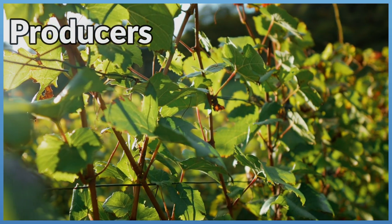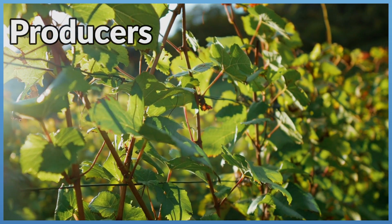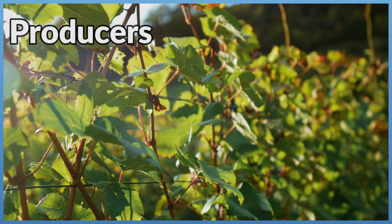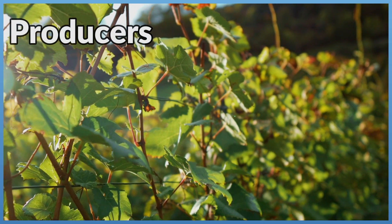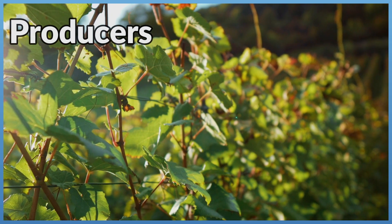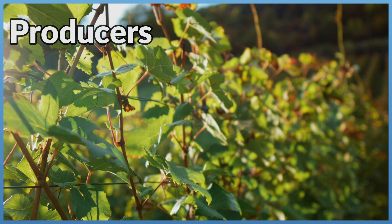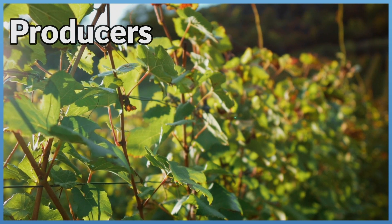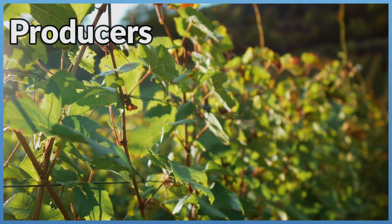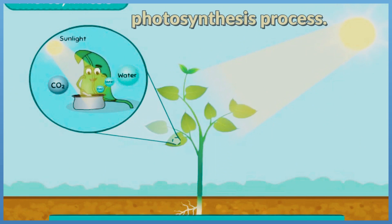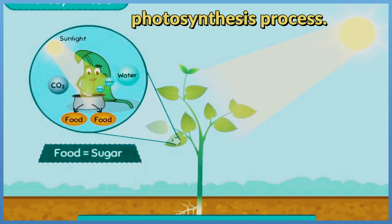Producers are able to produce their own food in the form of glucose sugar, which is rich with energy. They are organisms that can make their own food and don't consume other plants or animals. Plants use energy from the sun to produce their own food by the photosynthesis process.